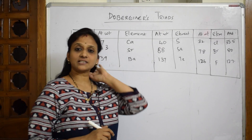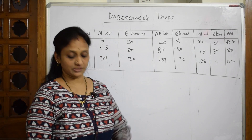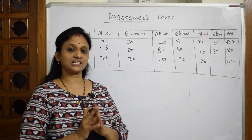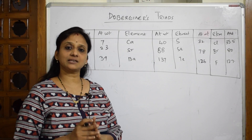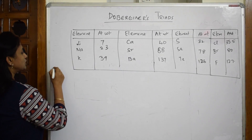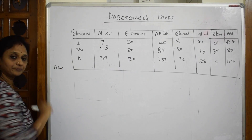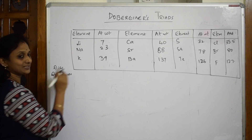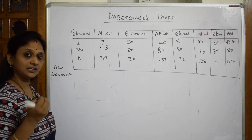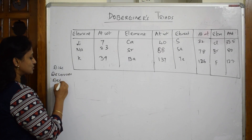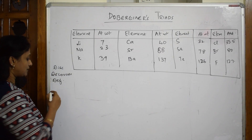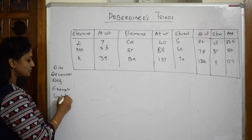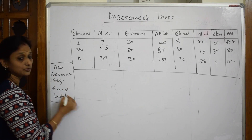After the discoveries, let us start with the first topic: Dobereiner's Triads. First, let us learn how to write an exam answer. There are three things to cover: first, when was it discovered; second, who discovered it and in which year; third, the definition; fourth, an example; and finally, the limitations. This format is very important for every concept.